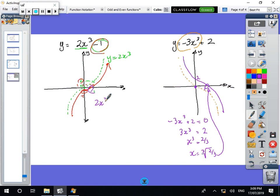It'd be 2x cubed minus 1 equals 0, 2x cubed equals 1, x cubed equals a half, x equals the cube root of a half, and that would be that number there.